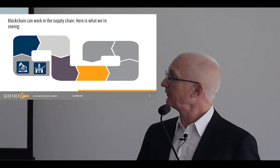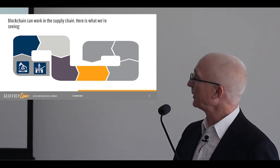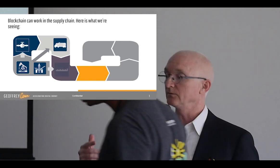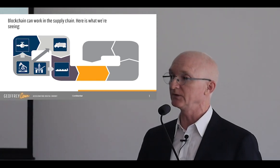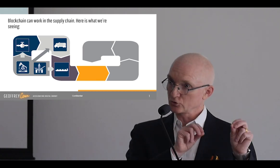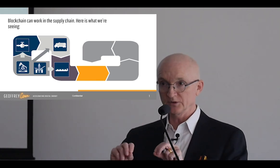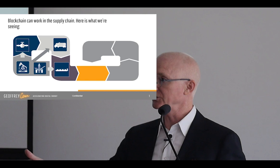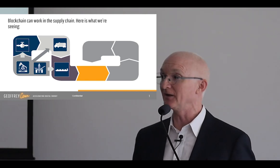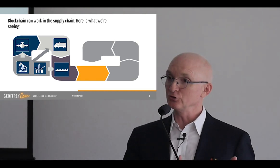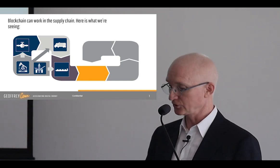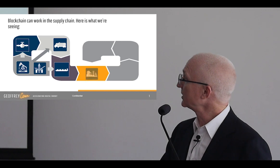Where does the oil go after you've produced it? It goes into the supply chain — into pipes and trucks and ships. There are blockchain companies working today on blockchain-enabled solutions to track petroleum product as it moves through the supply chain. Walmart does this with mangoes, pork, and tomatoes in China. Could you do it with oil, natural gas, and so forth through the supply chain? Yes, you can.